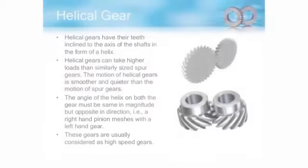Helical gears are one type of cylindrical gears with a slanted tooth trace. They have a large contact ratio, are quiet in operation, vibration-less, and can transmit a large amount of force. They are used in automotive transmissions, printing machines, and conveyor belts.